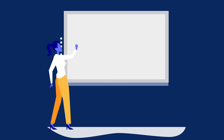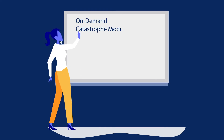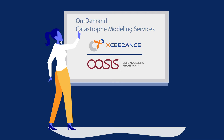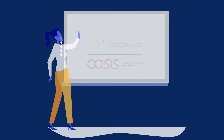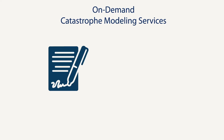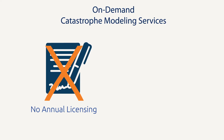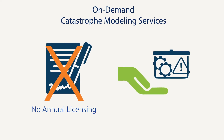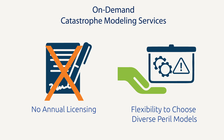Now they do. Introducing on-demand catastrophe modeling services from Exceedance on the Oasis Loss Modeling Framework. The Exceedance on-demand offering has no annual licensing requirements and gives insurers the flexibility to choose diverse peril models. Here's how it works.